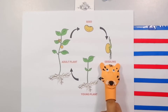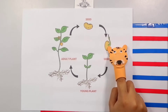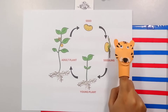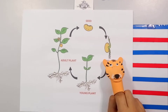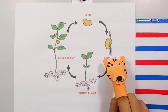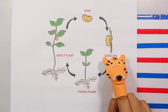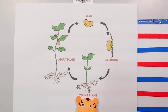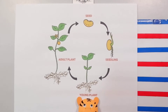A seedling is a seed with some sprouts coming out and also some roots. If it's given more and more nutrients, the seedling will turn into a young plant like this.